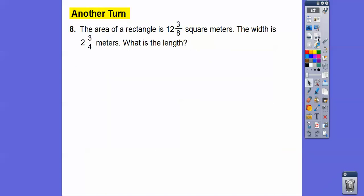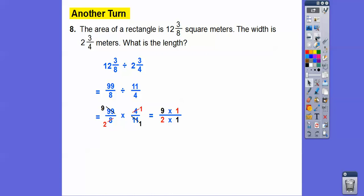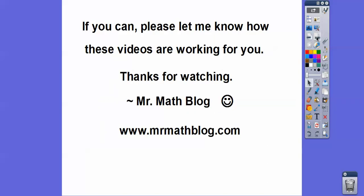One more: the area of a rectangle is 12 and 3 eighths square meters and the width is 2 and 3 fourths meters — what's the length? We divide and change to improper fractions, then keep-change-flip. 11 goes into 99 nine times, and 4 goes into 8 twice — cancel those down. 9 times 1 over 2 times 1 gives us 9 halves, which converts to 4 and a half meters. Area is always in square units and dimensions are in plain units. If these videos are helping, just let me know, and take care — hope you're having a great year.